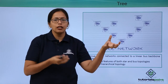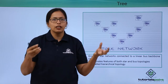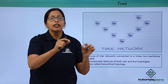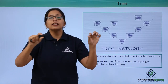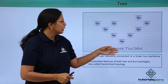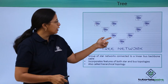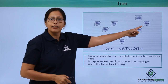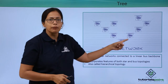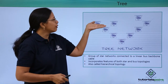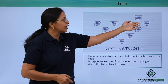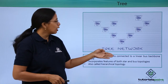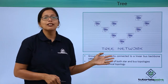You have one star network here, one star network here, one star network a few kilometers away — they will all be connected together in a single coaxial cable. As you can see, there is one cable running at the center which is the backbone, and there are groups of smaller networks that are attached to it. This is how a tree network is formed.